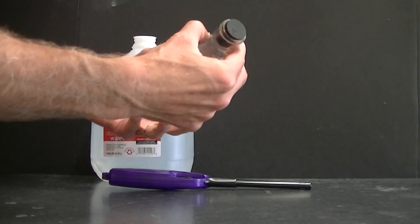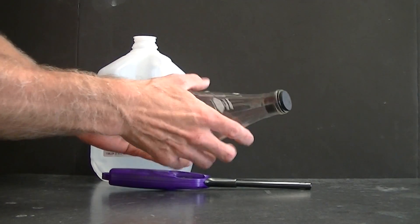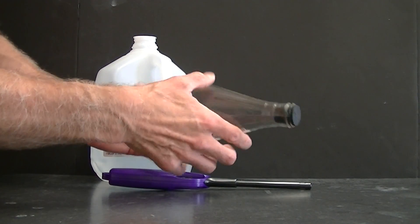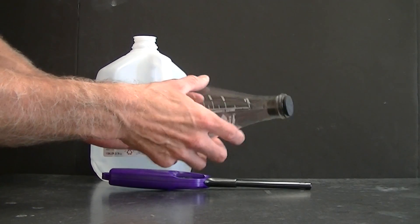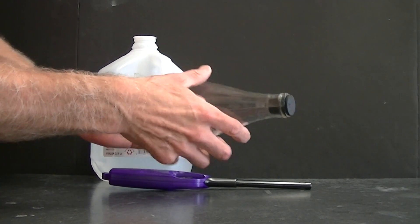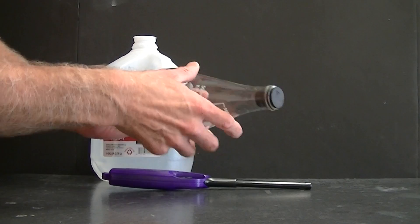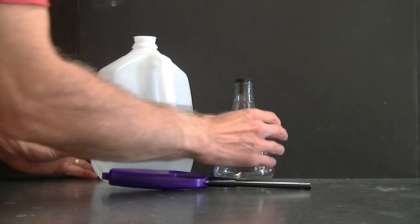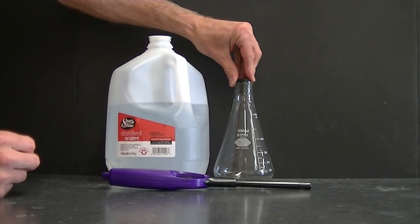Right before doing the experiment and without the audience seeing it, I'm going to coat the inside of the flask with the hexane, just by rolling the flask.